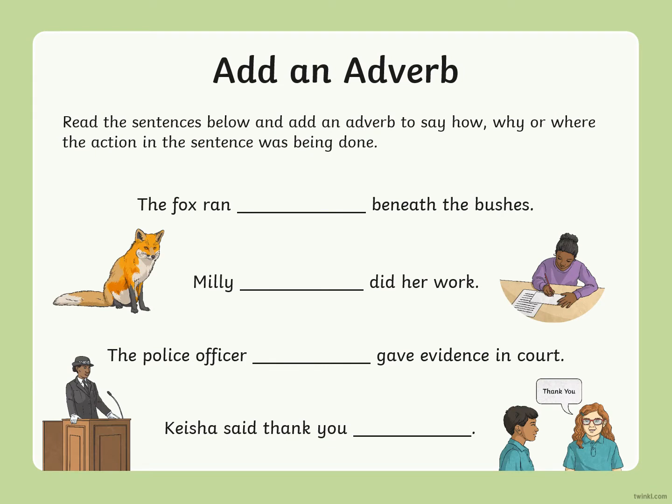Next activity: read the sentence below and add an adverb to show how, when, or where the action is being done. You don't have to write it down — just do it orally. The sentences are: The fox ran ___ beneath the bushes; Millie ___ did her homework; The police officer ___ gave evidence in court; and Keisha said thank you ___. My example answers: the fox ran quickly, Millie carefully did her homework, the police officer clearly gave evidence in court, and Keisha said thank you happily.